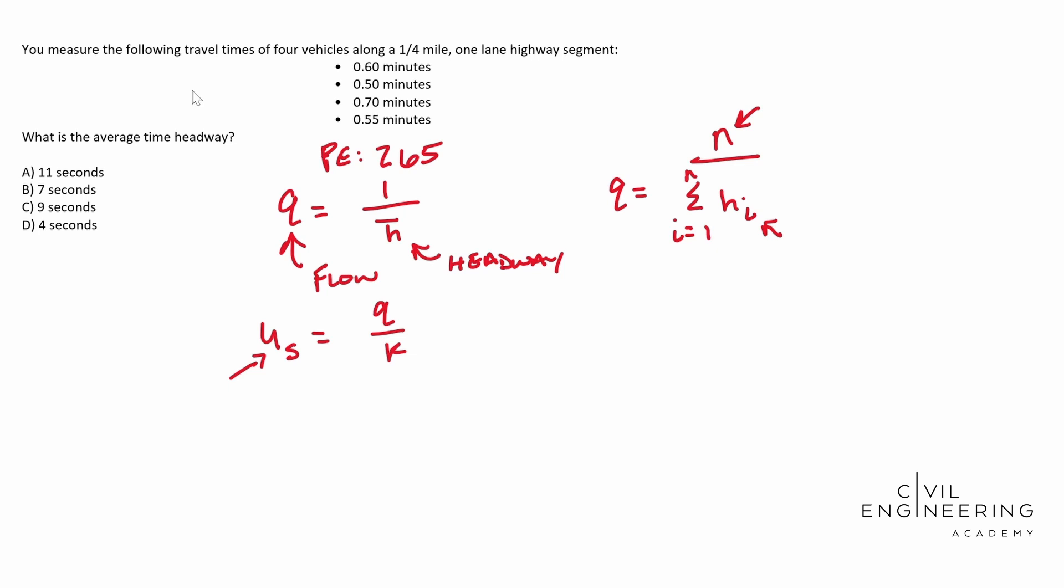Well, it is going to apply to us because the U S is space mean speed, which we can solve for, and the K is the density, which we can also solve for considering we're given a length and a number of cars. There's your density.